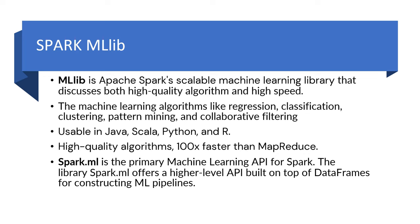Spark MLlib is Apache Spark's scalable machine learning library offering both high-quality algorithms and high speed. It includes machine learning algorithms like regression, classification, clustering, pattern mining, and collaborative filtering. It is usable in Java, Scala, Python, and R, and is 100x faster than MapReduce. Spark ML is the primary machine learning API for Spark, offering high-level APIs built on top of DataFrames for constructing ML pipelines.